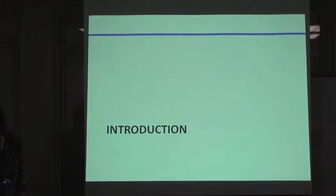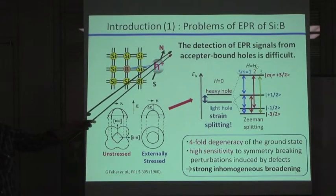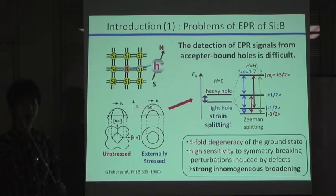Now, introduction. Electron-paramagnetic resonance, or EPR, is one of the most powerful tools for the investigation of various kinds of defects in semiconductors. However, it is known that the detection of EPR signals from acceptor-bound holes is very difficult. This is due to the high sensitivity to any symmetry-breaking perturbations.